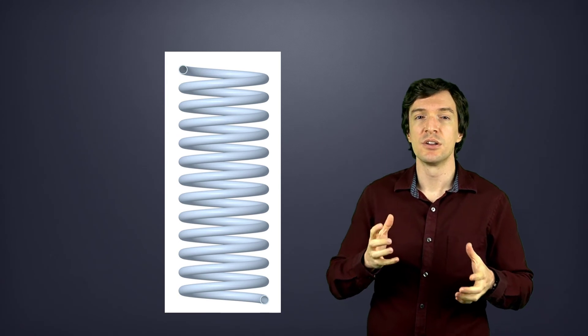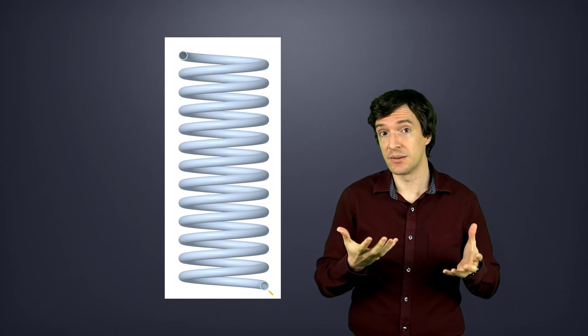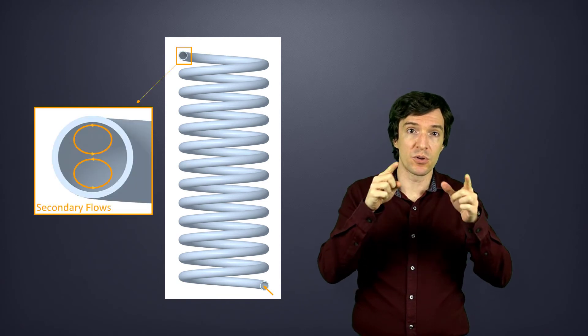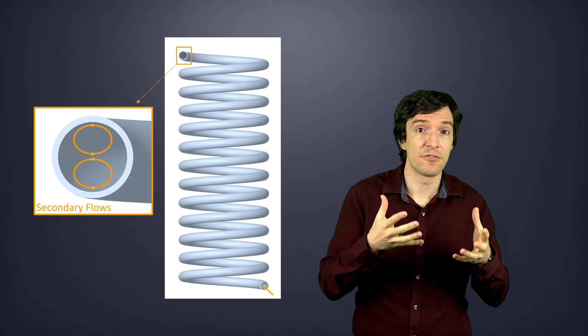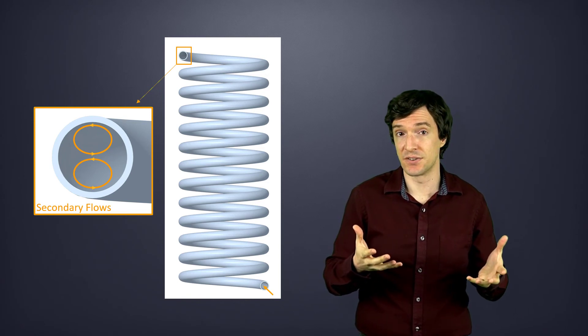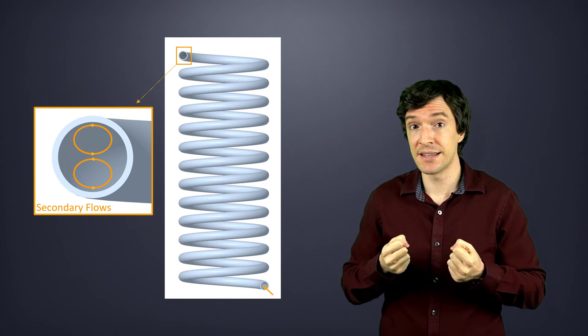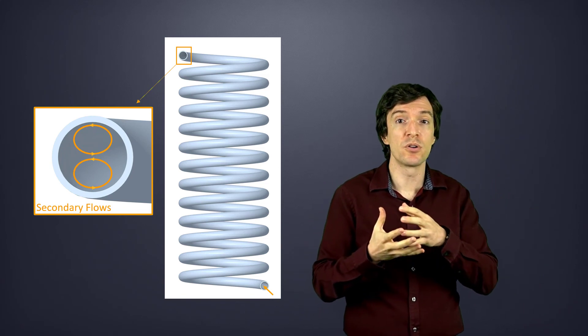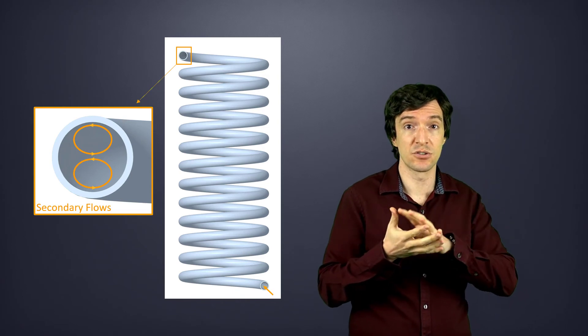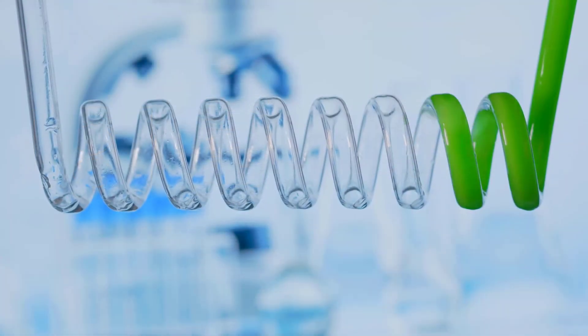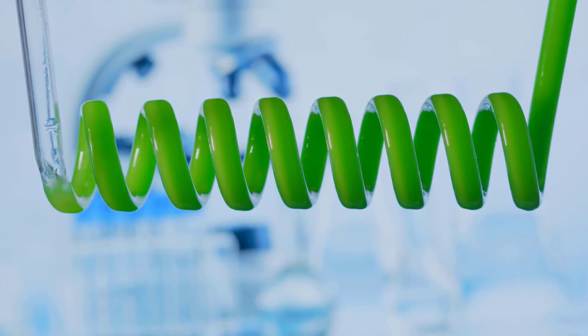Secondary flows can be very important to enhancing heat transfer. A simple way to generate them without using any insert is to coil the tube, so that the curvature will naturally generate secondary motion. A pair of counter-rotating vortices that forms greatly enhances the heat transfer rate. They reduce the entrance length and make the fluid temperature more uniform across a cross section of the tube. For this reason, this design is commonly used for chemical processes to produce pharmaceuticals or personal care products.